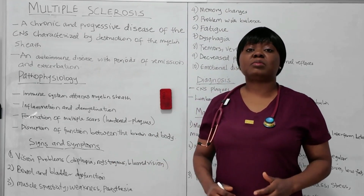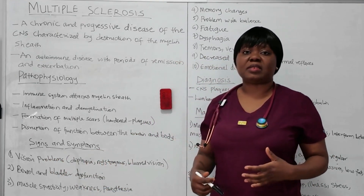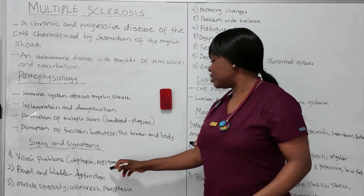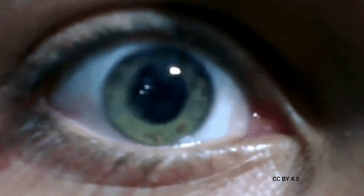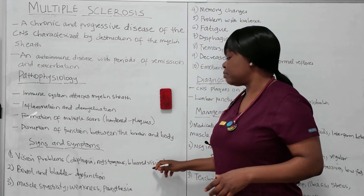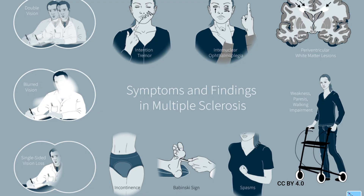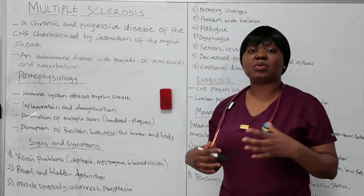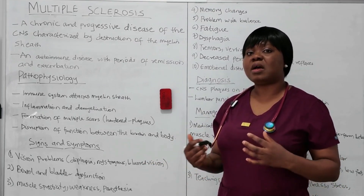The signs and symptoms of multiple sclerosis include vision problems like diplopia — that's double vision — and nystagmus, which is involuntary movement of the eye. Patients will also experience blurred vision. Then there is bowel and bladder dysfunction. Because there is a disruption in communication between the brain and the entire body, the patient will experience incontinence, urgency, and even difficulty in passing urine.